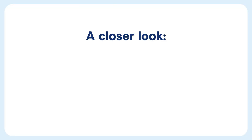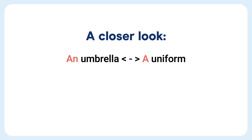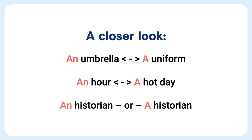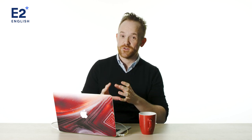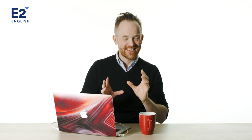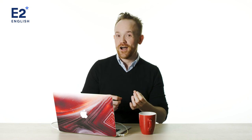If we look closer at U and H, we can see some differences: 'an umbrella' but 'a uniform,' 'an hour' but 'a hot day.' A really strange one is 'an historian' or 'a historian.' We'll say 'an hour' because in 'our,' H has a vowel sound. But in 'a hot day,' H is a consonant sound, so we use 'a.' Some words get a little messy — we have 'an historic day' or 'a historic day.' In that situation, you'll hear both of them, and either one is fine.